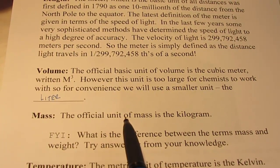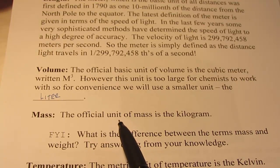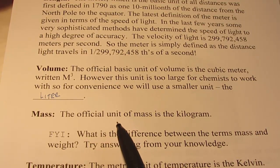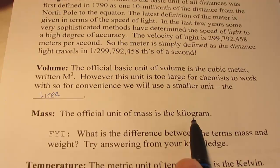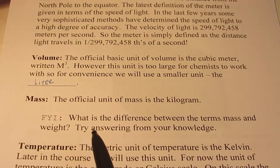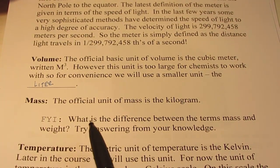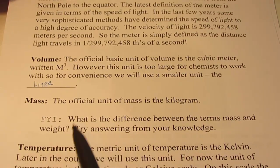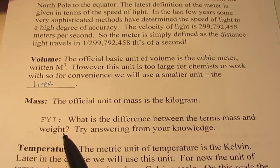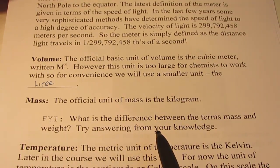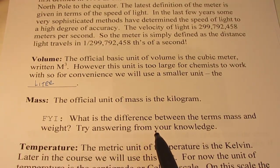Mass. The official SI unit or international system of measuring the mass of an object is the kilogram. Remember the difference between the terms mass and weight. We talked about that earlier, one of our very first discussions this year. Maybe you can go back and try to answer that from your knowledge.